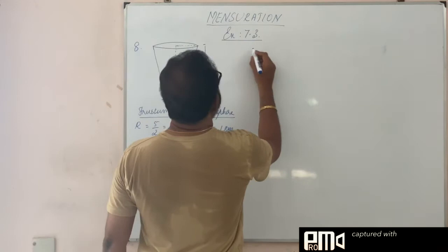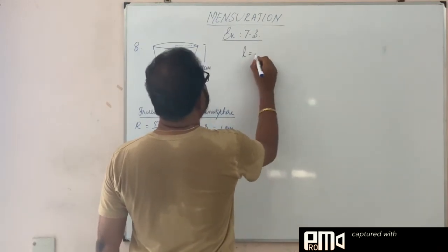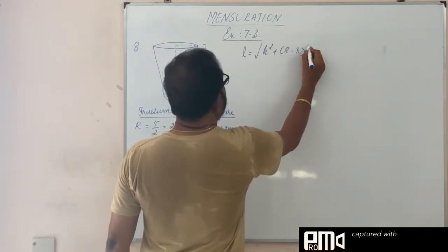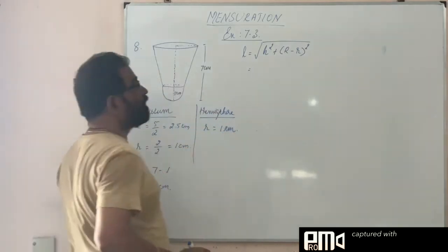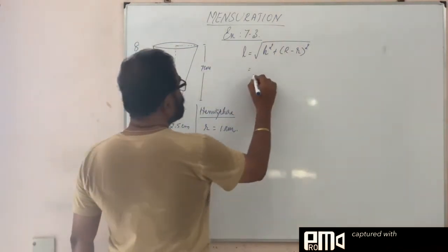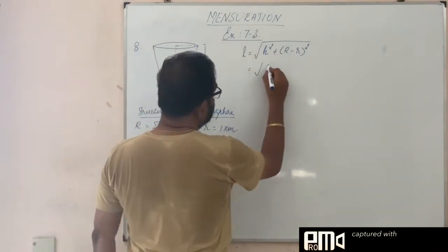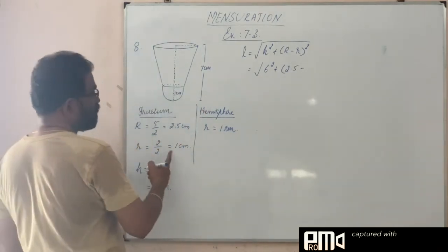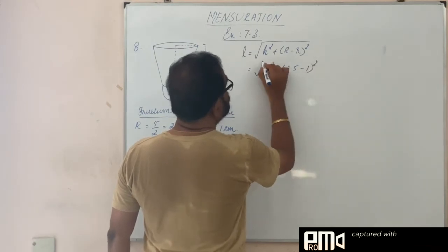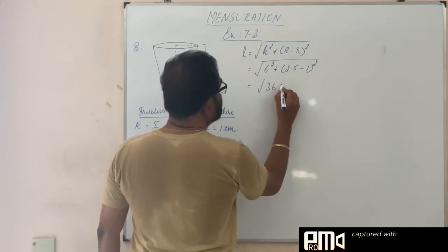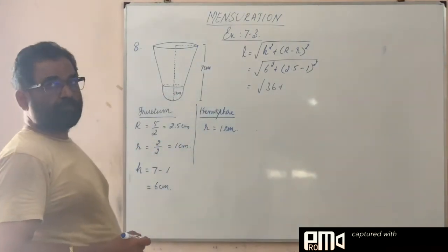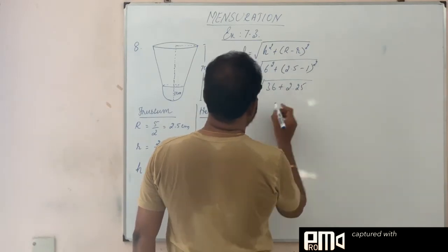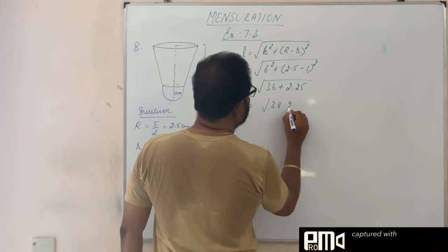Slant height L is equal to, you know the formula for slant height L. That is equal to square root of h squared plus (R minus r) the whole square. It is a formula to find out [the slant height]. 1.5 and 1.5, the whole square is 2.25. In many sense we have seen this, so square root of 38.25.